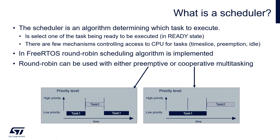The scheduler is an algorithm determining which task should be executed, with selection done from the ready-to-execute task list. In FreeRTOS, the round robin scheduling algorithm is implemented, and it can be configured in either pre-emptive or cooperative multitasking mode. Pre-emptive means a higher-priority task can interrupt the currently executing task, while cooperative mode means a task cannot be pre-empted even by a higher-priority task. In most cases, pre-emptive mode is used and is configured by default.